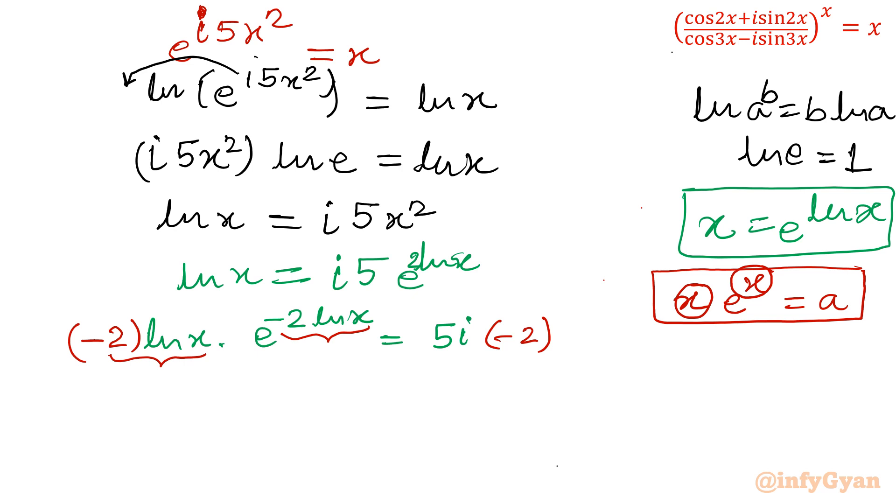Now if you notice, it is exactly minus 2 ln x. Again it is same, minus 2 ln x. You can check, and right hand side is minus 10i. Let me write directly: minus 2 ln x equal to Lambert W function of 5i times negative 2, so negative 10i.